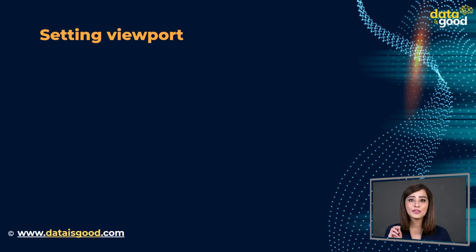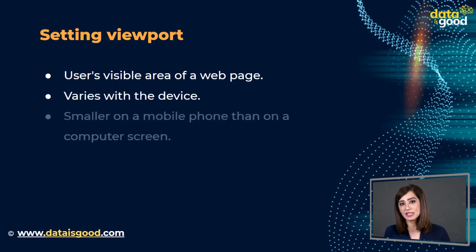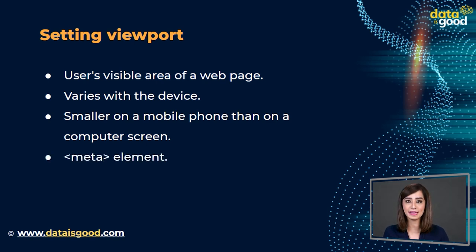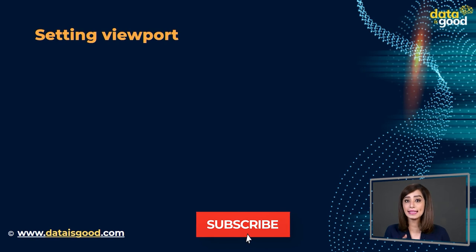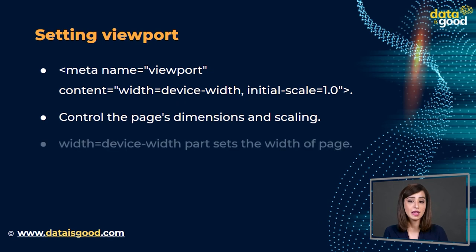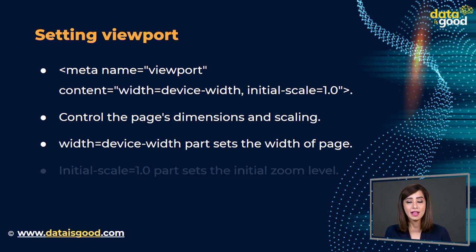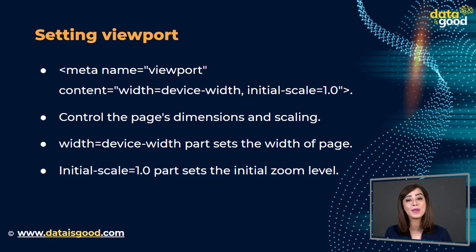Setting the viewport: the viewport is a user's visible area of a web page. It varies with the device — it will be smaller on a mobile phone than on a computer screen. You should include the viewport meta element in all your web pages. This gives the browser instructions on how to control the page's dimensions and scaling. The width=device-width part sets the width of the page to follow the screen width of the device. The initial-scale=1.0 part sets the initial zoom level when the page is first loaded by the browser.